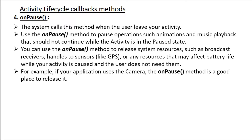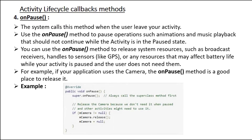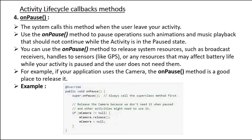For example, if your application uses the camera, onPause is a good place to release it. In the example shown, you must call the superclass implementation, then within onPause release the camera that was initialized in onResume — check if the camera object is not null, call the release method, and set the camera object to null.